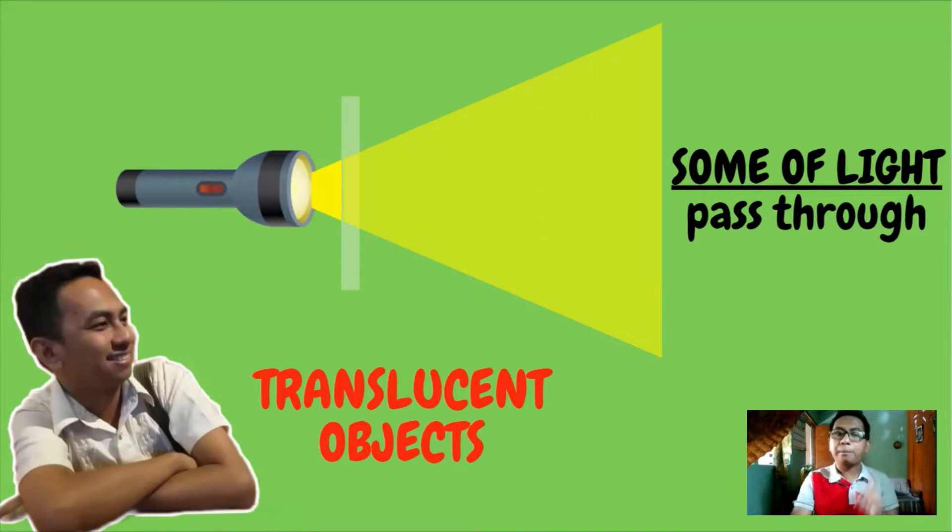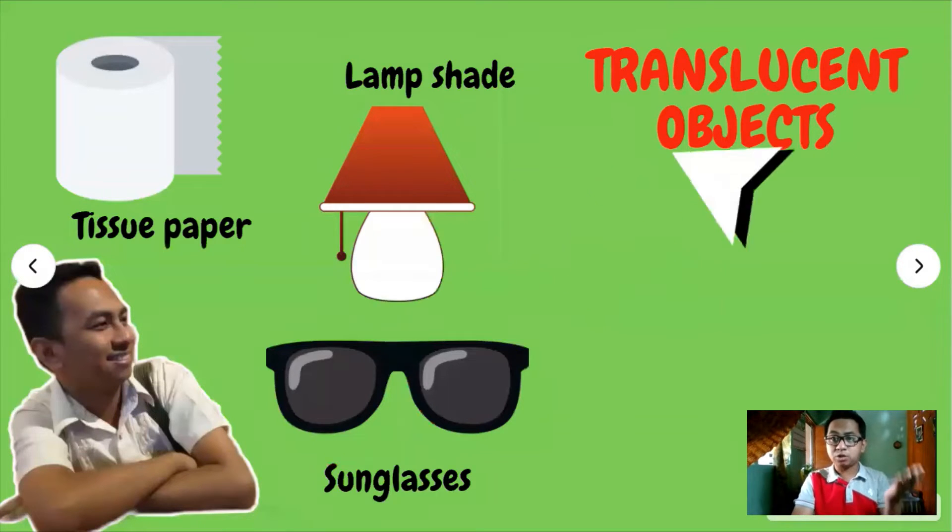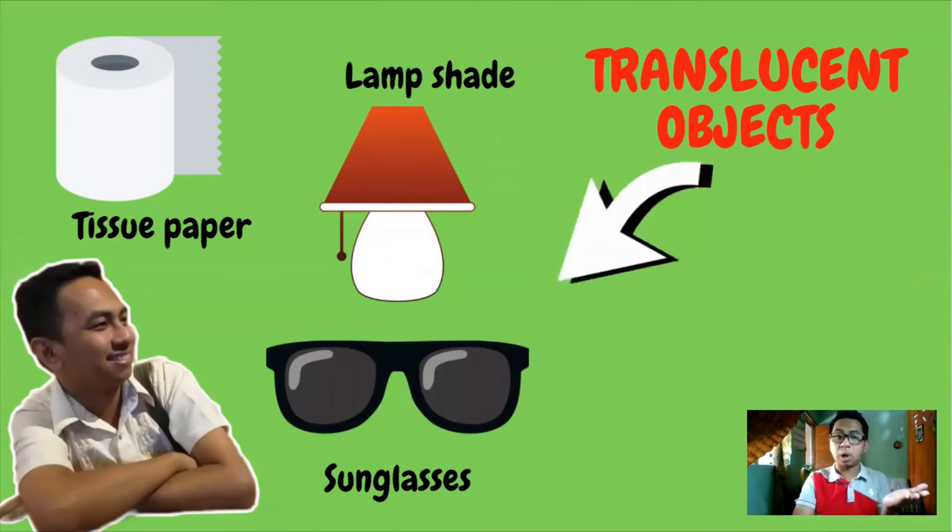If some of light passes through an object, it is called translucent. Examples of translucent objects are the lampshade, sunglasses, tissue paper, and others.